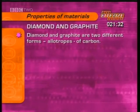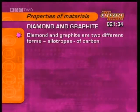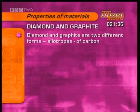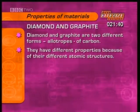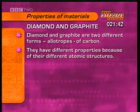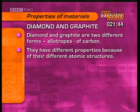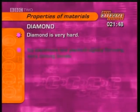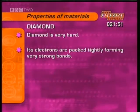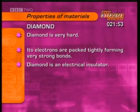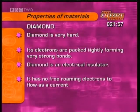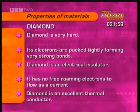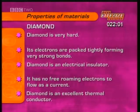The clip also looked at diamond and graphite — these are the two most commonly known forms, known as allotropes, of carbon. They have very different properties because of their different atomic structures. Diamond is very hard; its electrons are packed tightly between atoms, forming very strong bonds. Diamond is an electrical insulator because there are no free-roaming electrons to flow as current. Diamond is also an excellent thermal conductor.